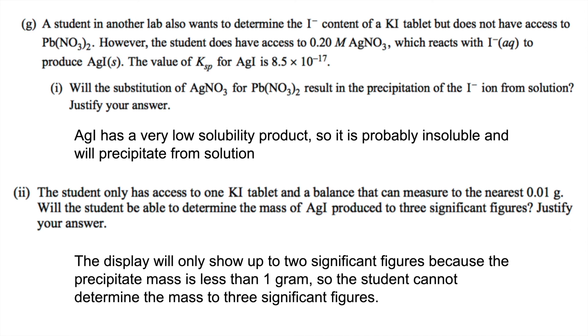Two says the student only has access to one KI tablet and a balance that can measure to the nearest 0.01 grams. Will the student be able to determine the mass of silver iodide produced to three significant figures? It says here that the display will only show to the nearest 0.01 gram. Because the precipitate's mass that we calculated earlier is less than one gram, you can have no more than two significant figures. Because if we want three significant figures, the precipitate's mass will need to be more than one gram. So no, you cannot determine the mass to three significant figures.